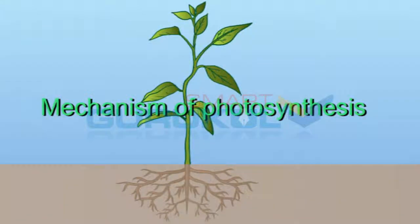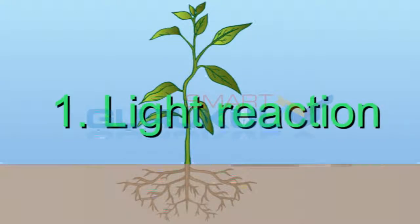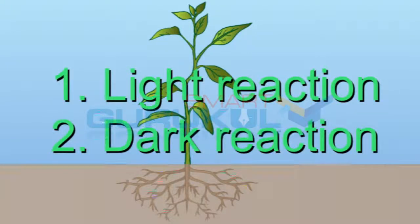Mechanism of Photosynthesis. The process of photosynthesis is divided into two phases: 1. Light reaction. 2. Dark reaction.